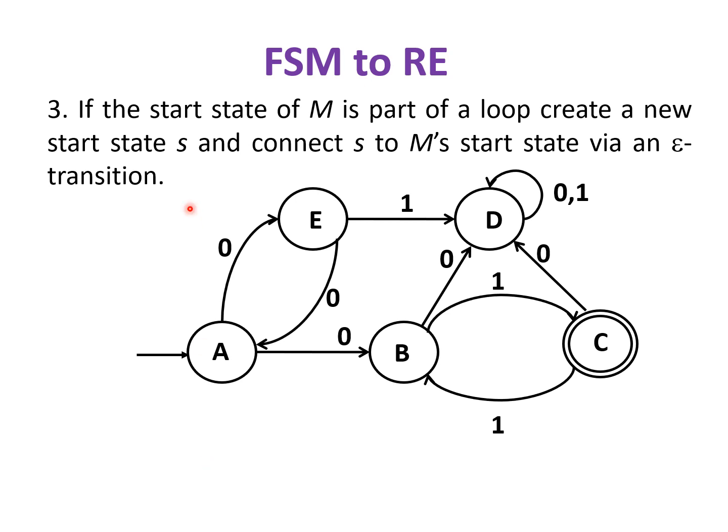In the third step, if the start state of the machine is part of a loop, then create a new start state connected to the old start state via epsilon transition. In this transition diagram, you can see start state A is part of the loop. Hence, a new start state is created with epsilon transition. And now, the start state for this machine is F and A is no longer the start state.